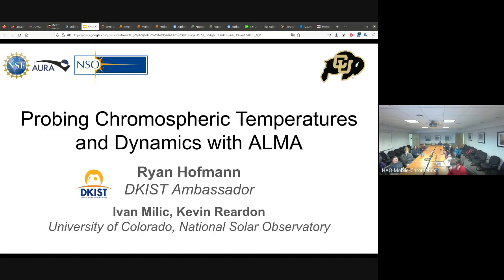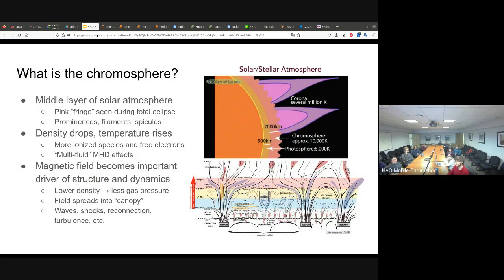So I'm assuming most of you are familiar with the chromosphere, but just to make sure that we're on the same page. The chromosphere is the middle layer of the sun's atmosphere. If you've ever seen a total solar eclipse, it's that pink fringe that you see during totality. It's where you have all these different phenomena like prominences, filaments, spicules, magnetic reconnection flares, all that stuff.